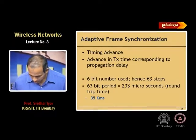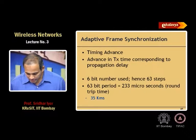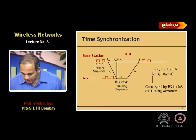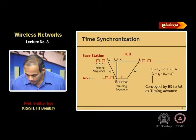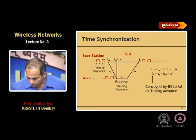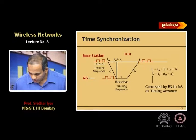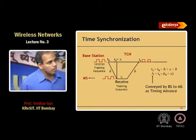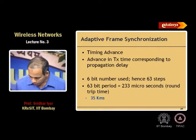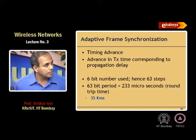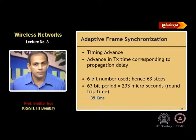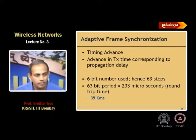In timing advance, a 6-bit number is used to convey the delta value from the base station to the mobile node — advance your notion of time by this delta number of units. A 63-bit time period turns out to be 233 microseconds round-trip time, which corresponds to approximately 35 kilometers.